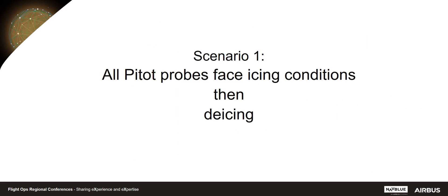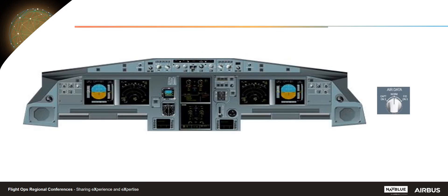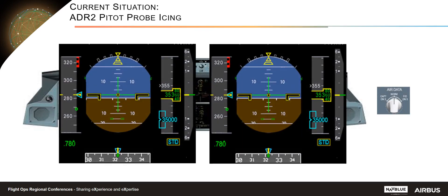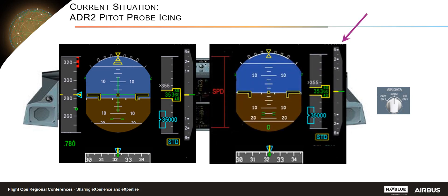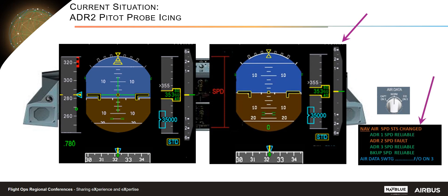Let me provide you with two failure scenarios to illustrate the behavior and displays associated with this new monitoring. These scenarios are very remote ones, but the idea is to present the worst-case scenarios and associated behavior. The first scenario considers successive icing conditions on three pitot probes leading to ADR speed faults. During the flight, icing conditions are encountered, leading to ADR2 speed being detected as faulty. The speed scale appears with a new 'NAV iSpeed Data Change' ECAM alert.